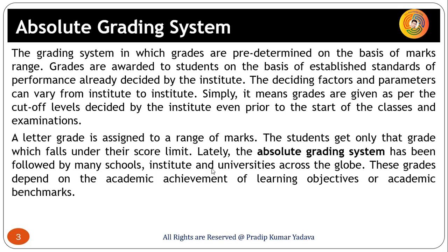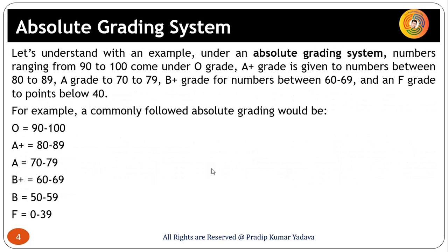In absolute grading, grades are predetermined based on a marks range. Grades are awarded to students based on stabilized standards of performance already decided by the institute or UGC. All marks ranges are predefined, and whichever range a student's score falls into determines their grade.